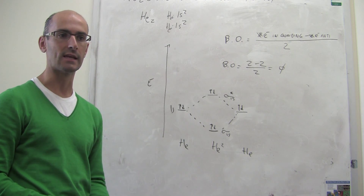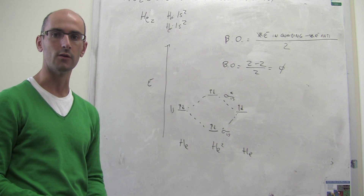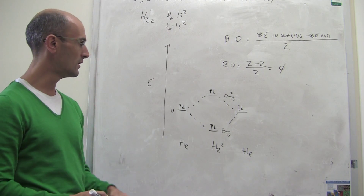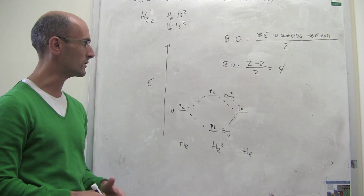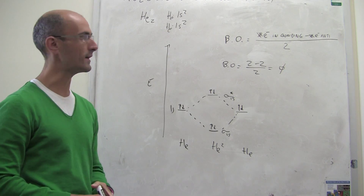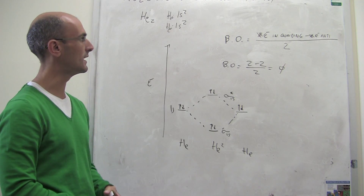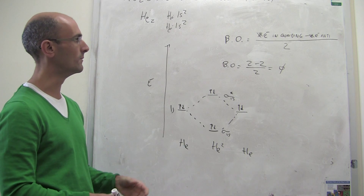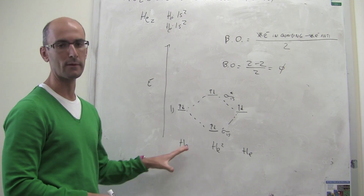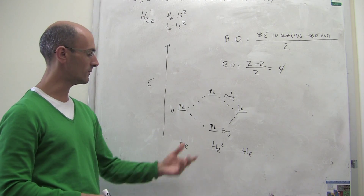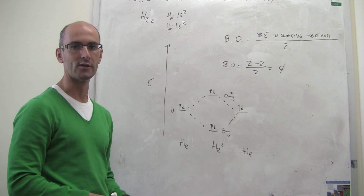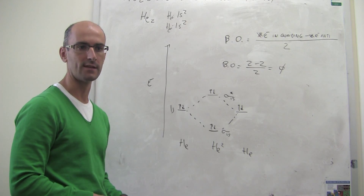This agrees quite well with reality — there is no such thing as an He2 molecule with a covalent bond between the atoms. The molecule He2 is not stable; there might be interatomic interactions, but they are very weak and not a covalent bond according to molecular orbital theory. We'll continue to see how this applies to other diatomic molecules in the next video.